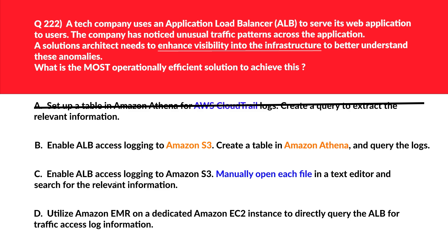Option C says enable ALB access logging to Amazon S3 and manually open each file in a text editor to search for the relevant information. Manually searching through log files is time-consuming and inefficient. We know we should reduce manual processes, as they are also prone to human errors. Let's reject this.